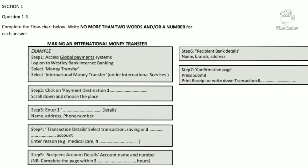You will hear a number of different recordings and you will have to answer questions on what you hear. There will be time for you to read the instructions and questions and you will have a chance to check your work. All the recordings will be played once only. The test is in four sections. At the end of the test you will be given 10 minutes to transfer your answers to an answer sheet.